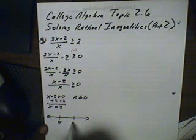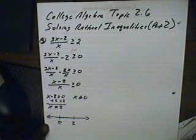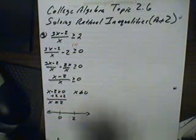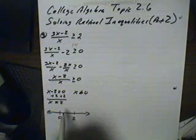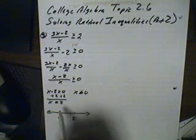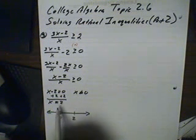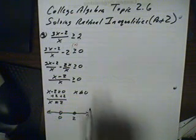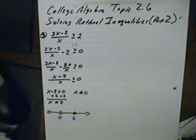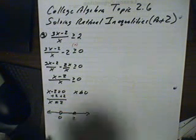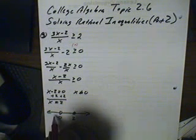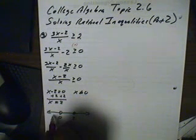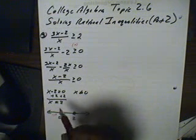Zero will go here and two will go there. The zero is 'not equal to,' so this will be an open circle, whereas the two is 'equal to,' so this will be a closed circle. Now we need to test the three areas. We need a number before zero, so we're going to try x = −10.